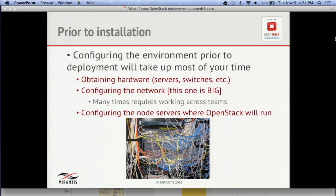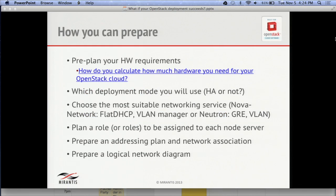One challenge is communication between groups — you've got to talk between your server group and your network group, making sure those communication paths are open from the beginning. Then there's the actual configuration of the servers themselves: BIOS, firmware, and hardware configuration parameters all need to be set properly. To prepare, pre-plan your hardware requirements — we have a utility on our website to help pick the right hardware. Make decisions about high availability (multiple controllers), and choose your networking service: Nova Network, Neutron with GRE, or VLAN segmentation — all before starting your deployment.